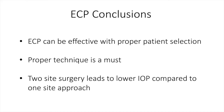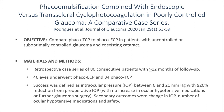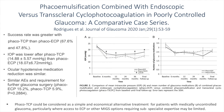Some conclusions for ECP: ECP can be effective with proper patient selection. Proper technique is a must. Two-site surgery leads to lower IOP compared to one site. There have been many studies looking at ECP with phacoemulsification, but few comparing ECP to transcleral cyclophotocoagulation. A study by Rodriguez and colleagues compared the two and found that phaco with transcleral CPC could be considered a simple and economical alternative for patients with medically uncontrolled glaucoma, particularly where access to ECP or minimally invasive procedures requiring subspecialist expertise is limited. Surprisingly, IOP was significantly lower in the transcleral CPC group, and the adverse event profile was similar between the groups.